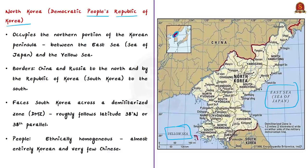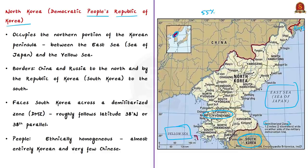North Korea covers around 55 percent of the land area of the Korean Peninsula. In the north it is bordered by China and Russia, and in the south by the Republic of Korea (South Korea). The capital is Pyongyang, a major industrial and transport center near the west coast. North Korea and South Korea are separated by a Demilitarized Zone that roughly follows the 38th degree north latitude (38th parallel). This DMZ was established by the 1953 armistice that ended the Korean War of 1950–1953.